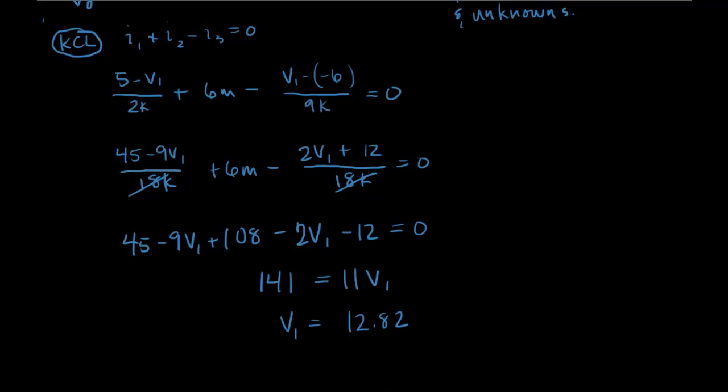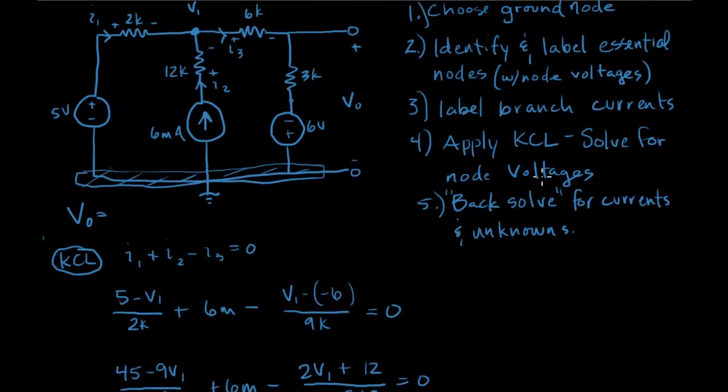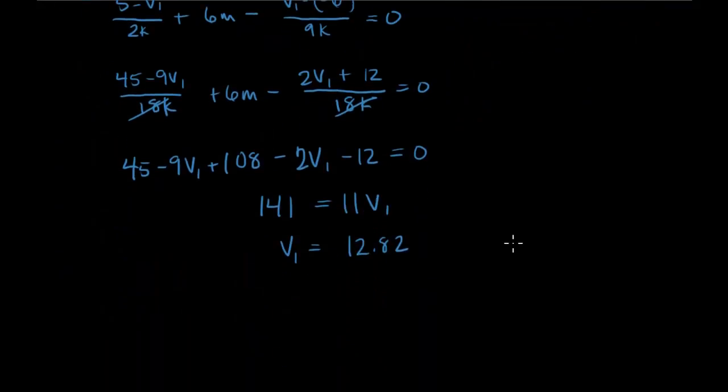So we have now applied KCL and solved for the node voltages. And now we want to back solve for the currents and the unknowns. We don't need all the currents. We really only need I3 because I3 is going to help us to answer what is V naught. So we already have an equation for I3. It's right here. So let me just go down below and apply that. It's V1 minus negative 6 over 9K, and that is I3. So we get 12.82 plus 6 over 9K. And when you do the math on that you will get 2.09 milliamps.